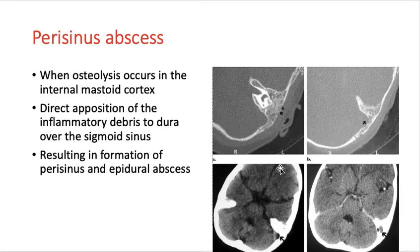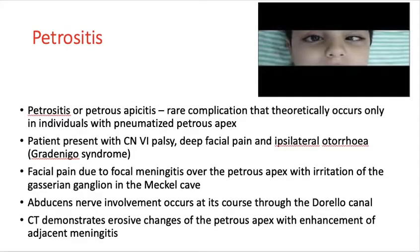You can also see perisinus abscess on imaging. Petrositis is inflammation of the petrous part of the temporal bone. When infection spreads from the middle ear and mastoid to the petrous part of the temporal bone, it is called petrositis. The petrous part also has air cells, similar to the mastoid, making it susceptible to involvement.